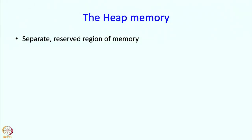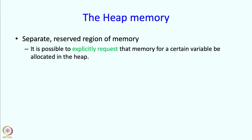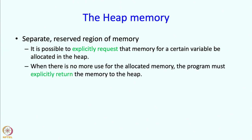In addition to the activation frames, we also have so-called heap memory. This is a completely separate reserved region of memory, completely different from the activation frames. In this memory it is possible to explicitly request memory for a certain variable. That memory will be given from the heap — the variable is said to be allocated on the heap. And when there is no more use for the allocated memory, the program must explicitly return the memory to the heap, effectively saying: now I do not need this memory, take it back, and maybe give it to me later if I ask for it again.